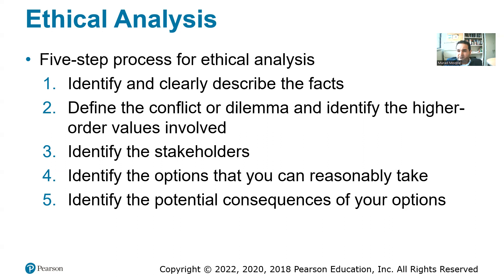Third, identify the stakeholders — differentiating between stakeholders and stockholders. Stakeholders are everyone who has a relationship to the incident: the victims themselves, relatives of victims, Boeing, the companies that bought aircraft from Boeing, the US government, other governments, competitors, software engineers, and CEOs. Fourth, identify the options you can reasonably take — for example, stopping the sale of this aircraft, which actually caused Boeing's stock to drop almost 50%.